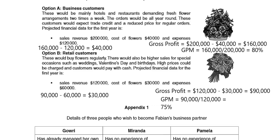Let's do the final one and look at the profit margin. For option A, the profit divided by the sales revenue gives a profit margin of 20%. With option B, the profit of $30,000 divided by the sales revenue of $120,000 gives a higher profit margin of 25%. That does suggest that the expenses for option A could cause problems and is something we need to explore.